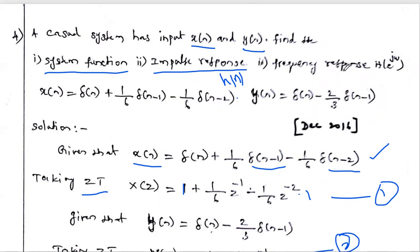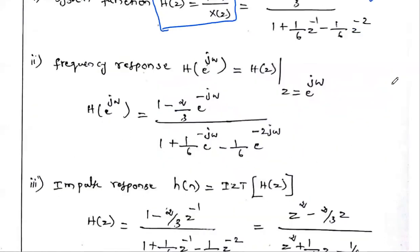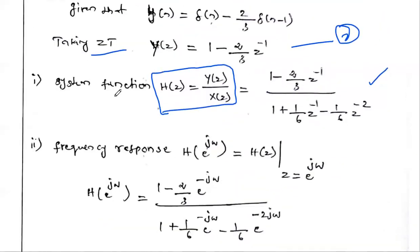The second thing is the impulse response, and the third is the frequency response H(e^jω). The frequency response H(e^jω) is similar to the system function — we take the ratio of Y(z) over X(z) for the system function, and similarly H(e^jω) = Y(e^jω) / X(e^jω).